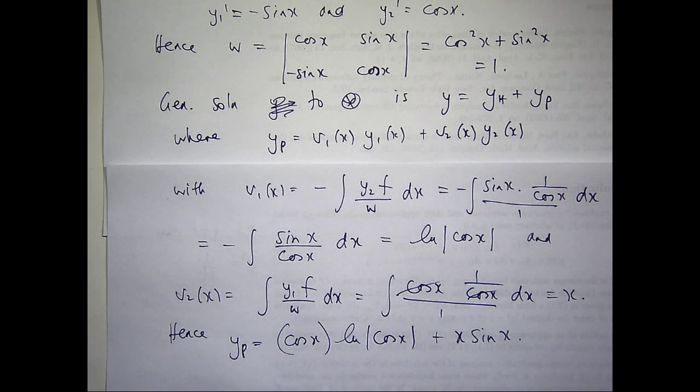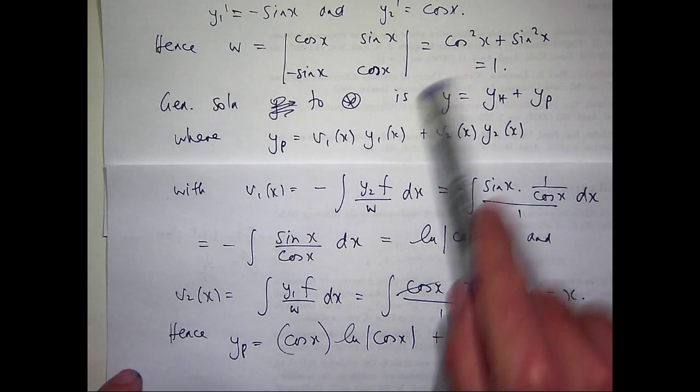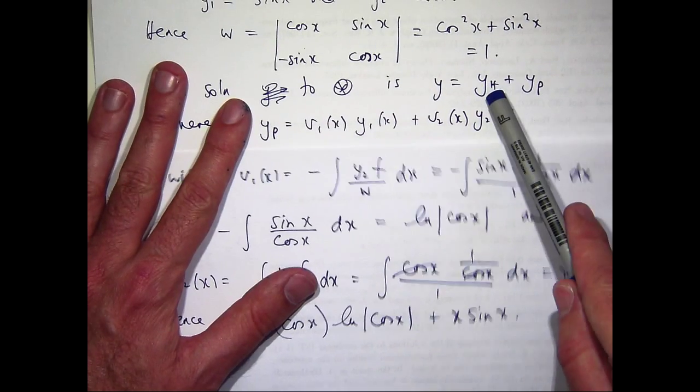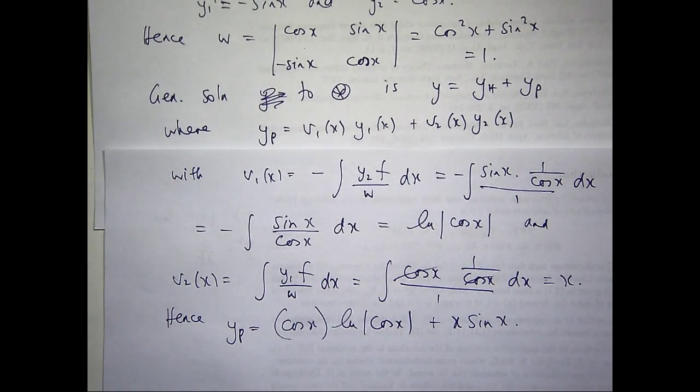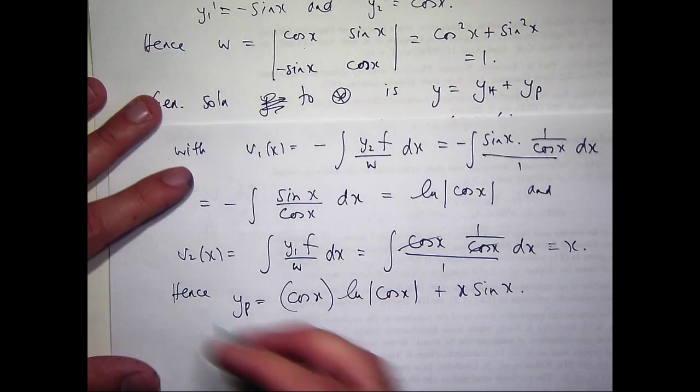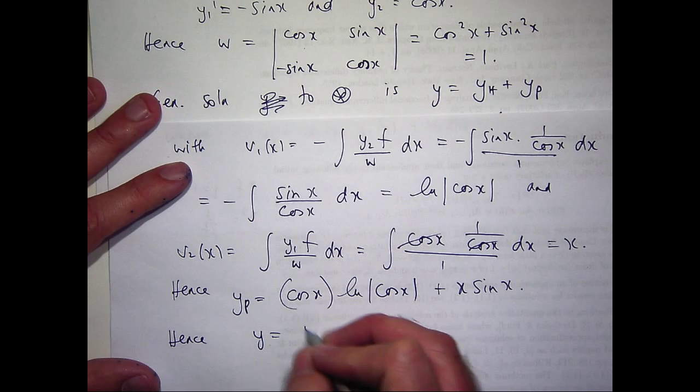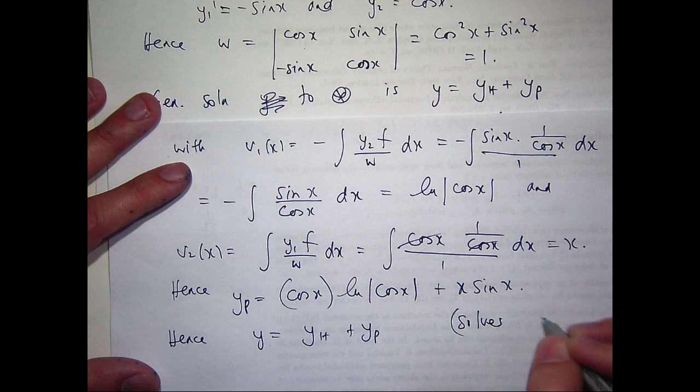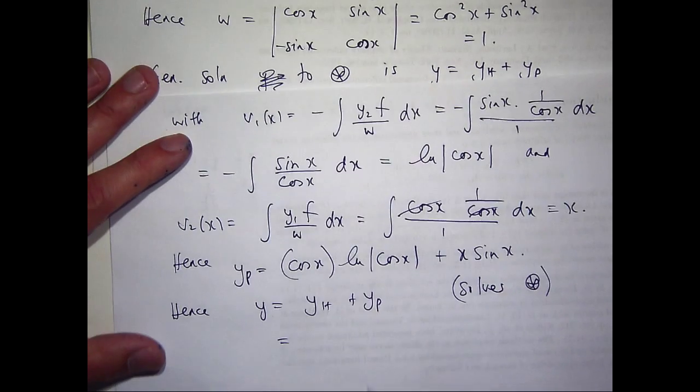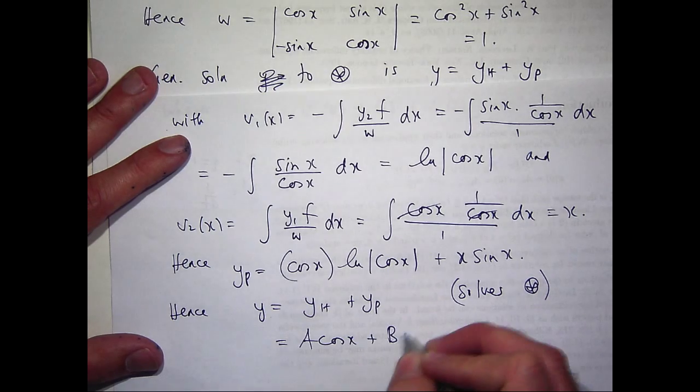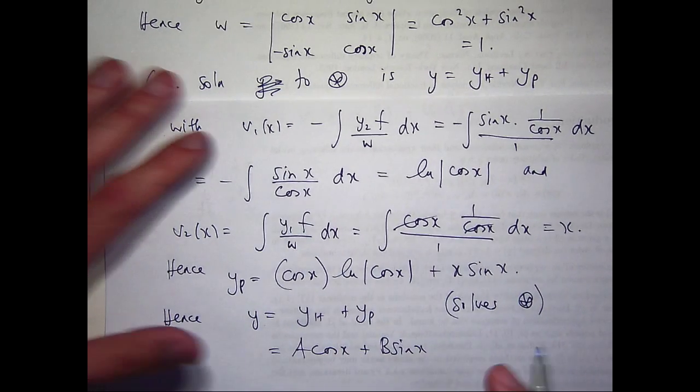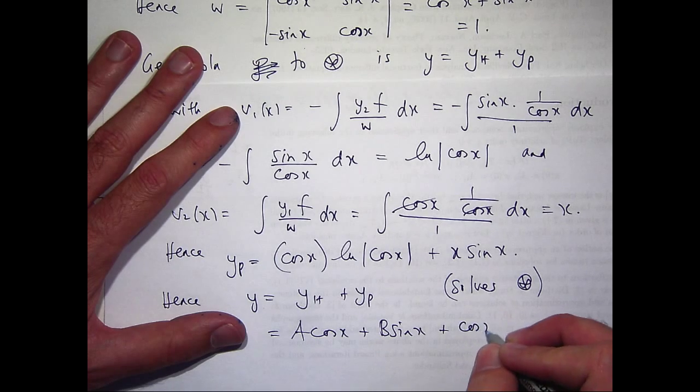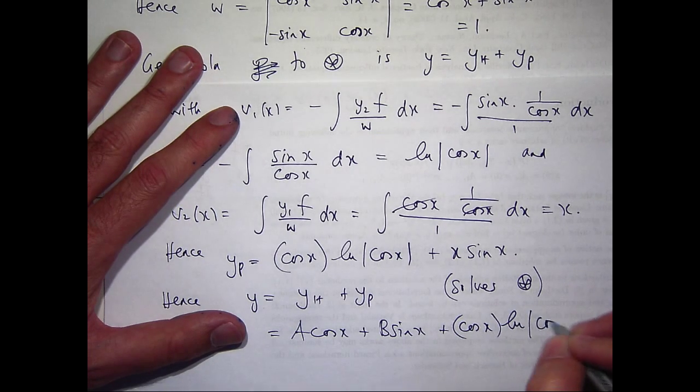So now as a final step, I've calculated my y sub p. What I want to do is use this now. So the solution y to star is the homogeneous solution plus a particular solution. So it's going to be something like A cosine x plus B sine x plus cosine x log cosine x plus x sine x.